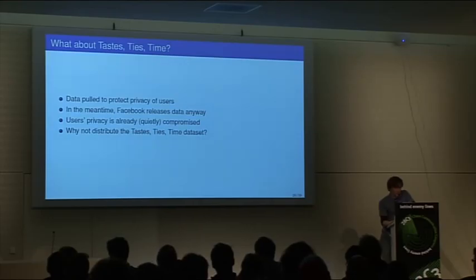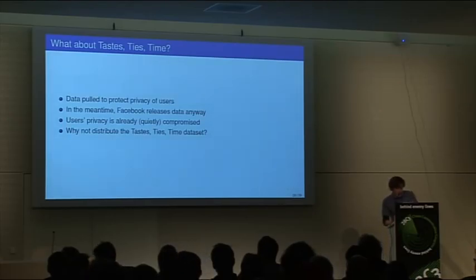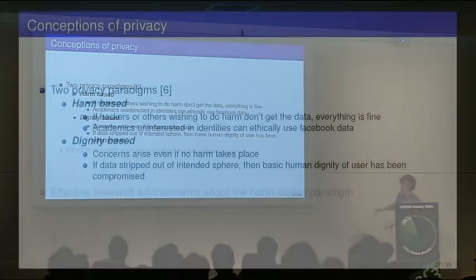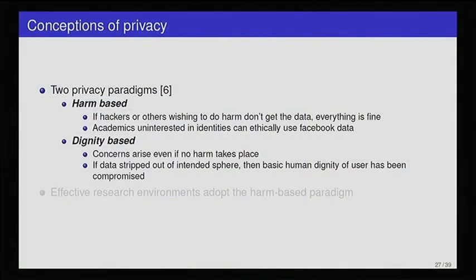The user's privacy has already been quietly compromised. Most of the users aren't aware of this. So this brings up the question of why don't we distribute the Tastes, Ties, and Time data set or similar data sets? This is just one example to be concrete, but there are other situations where data sets have been posted and then pulled down at the request of the provider.